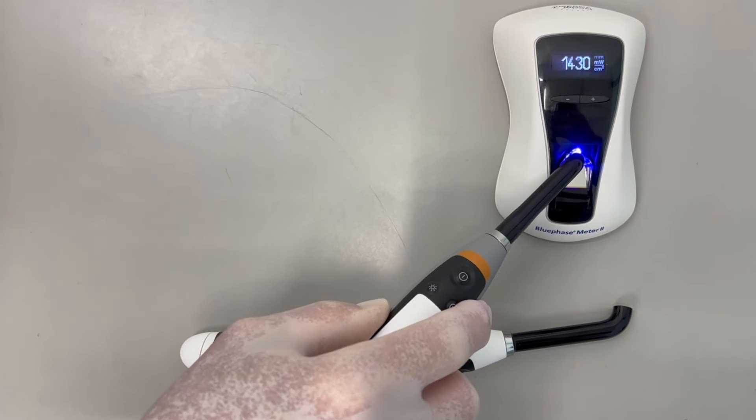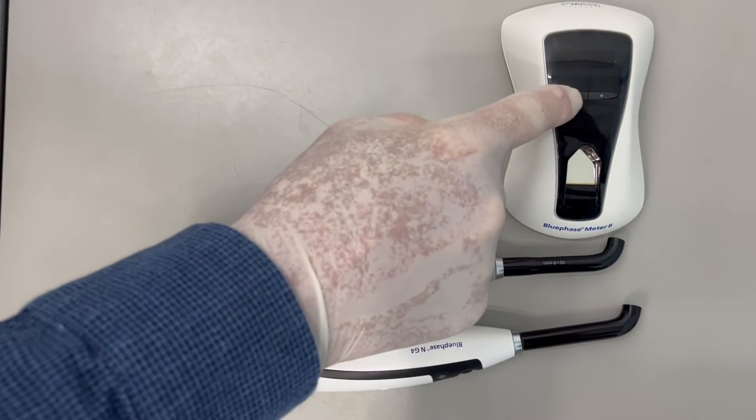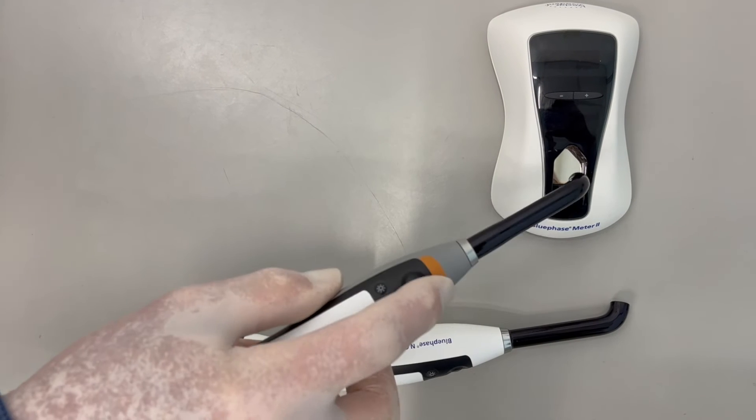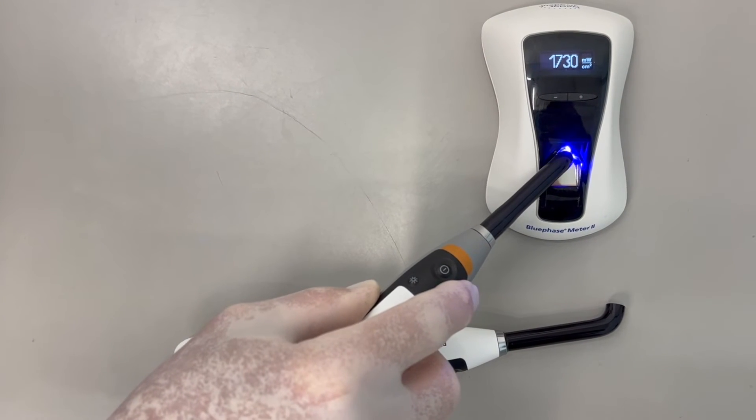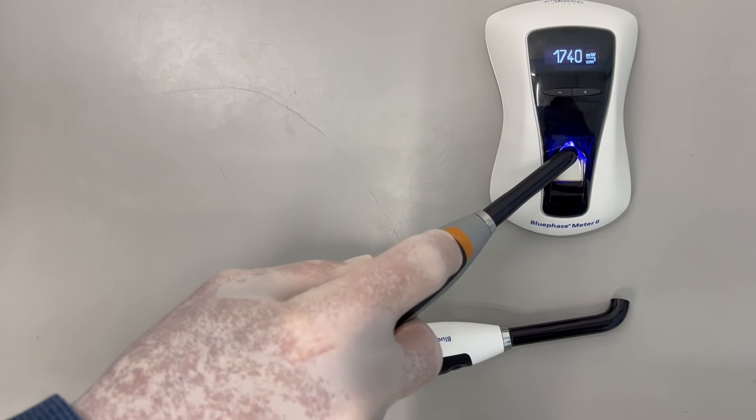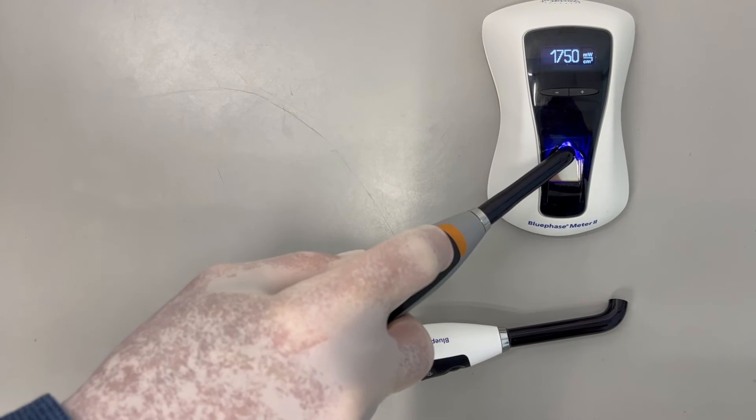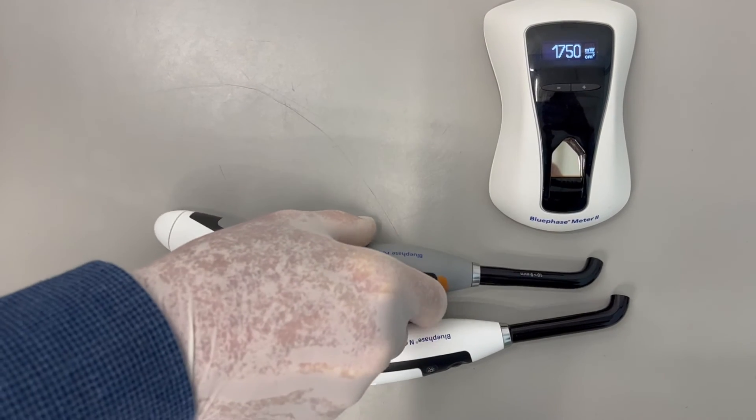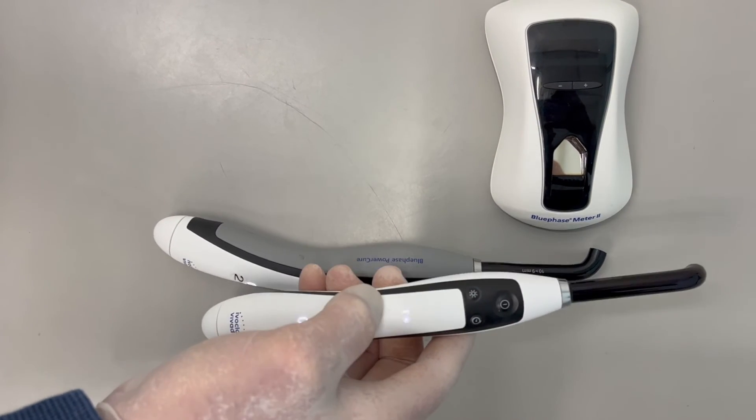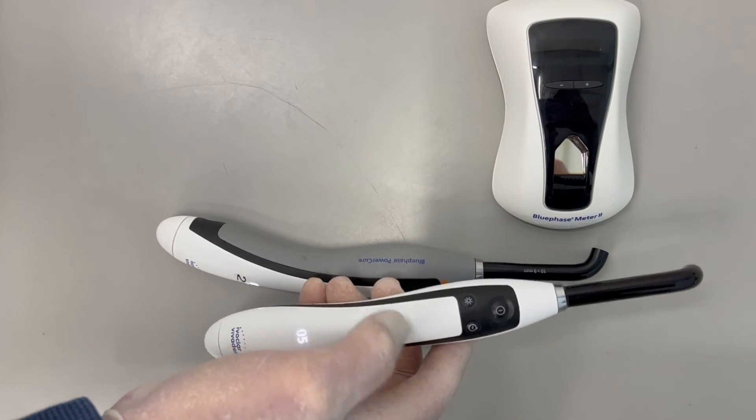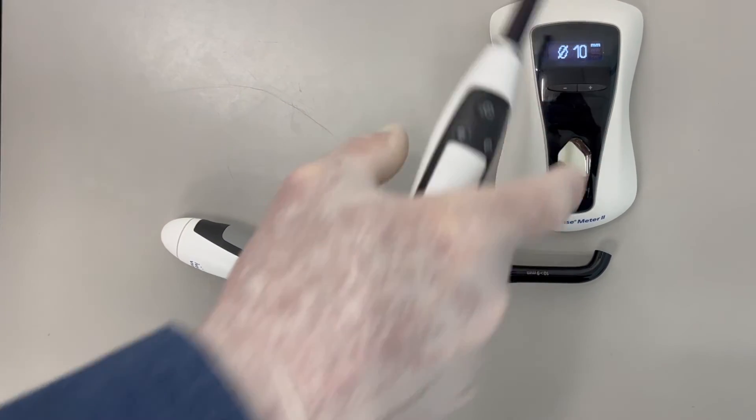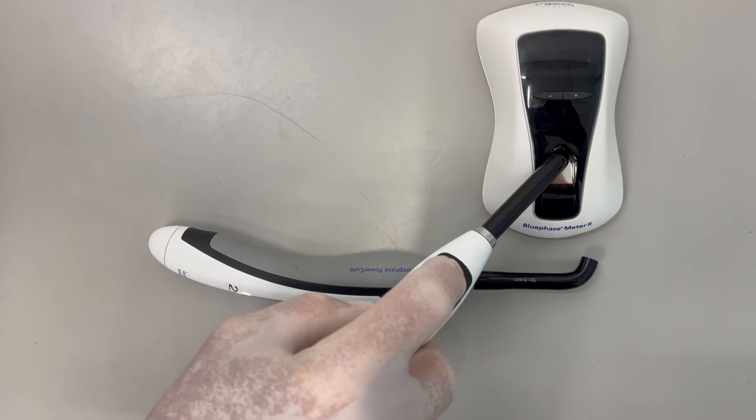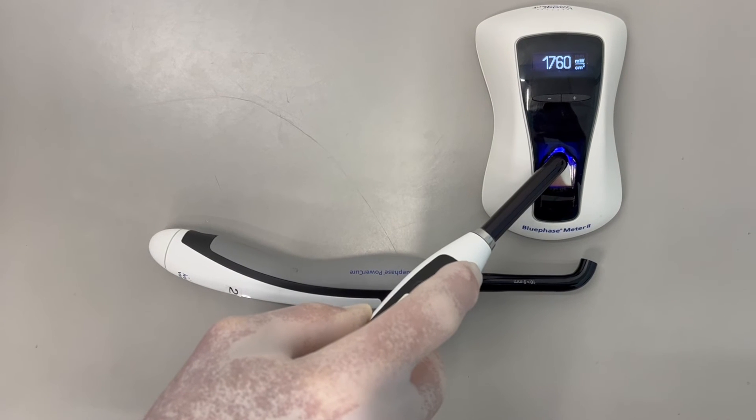When we set the tip diameter to 9mm, the irradiance is now 1750. This video shows the tip diameters between these two lights are slightly different: the PowerCure has a 9mm tip diameter, whereas the NG4 has a 10mm tip. Both curing lights deliver the same irradiance on high and turbo settings.